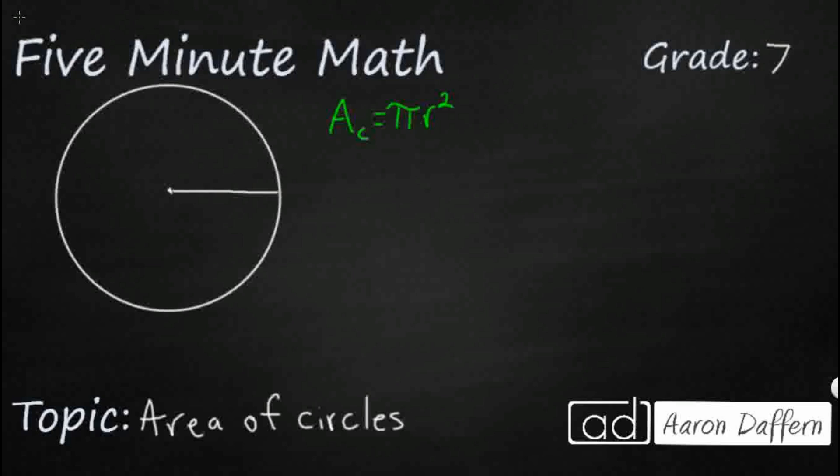So pi is a constant, it's actually a Greek letter, that is approximately 3.14. It's actually an irrational number that goes on forever and ever and ever. It never actually stops.